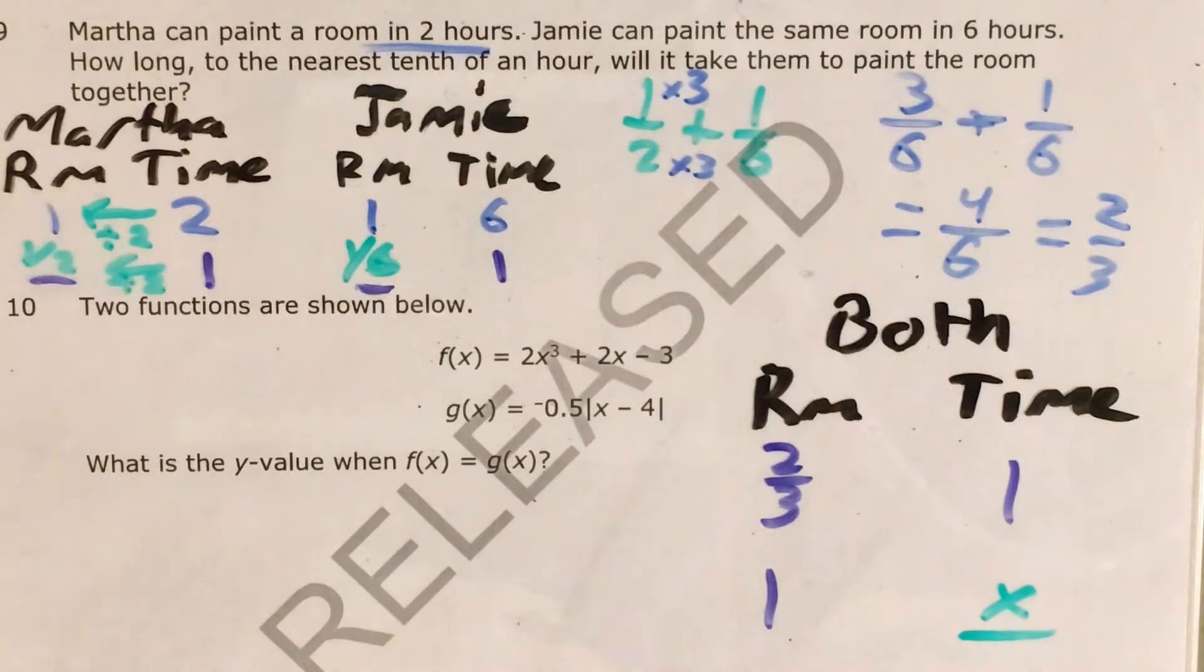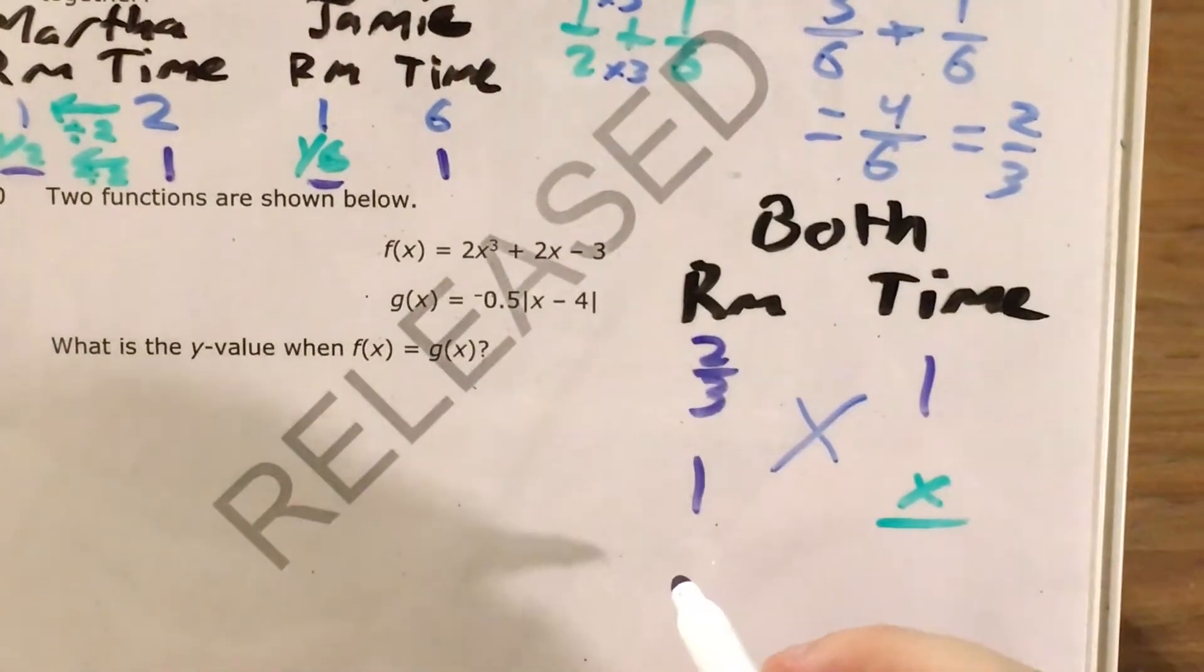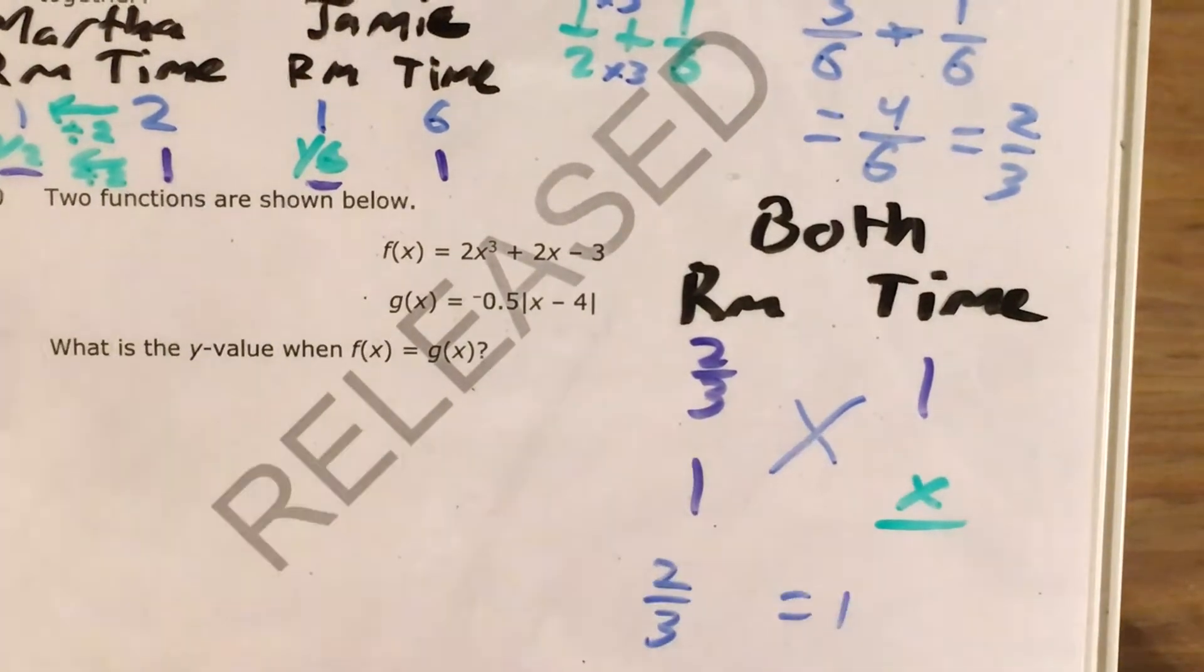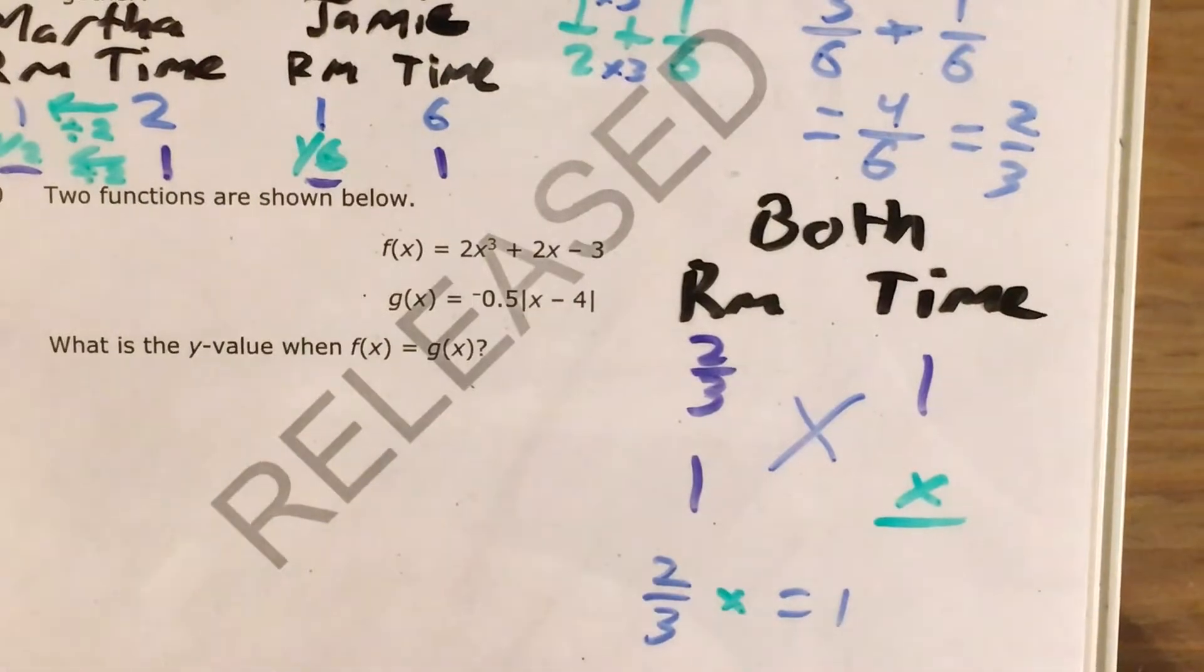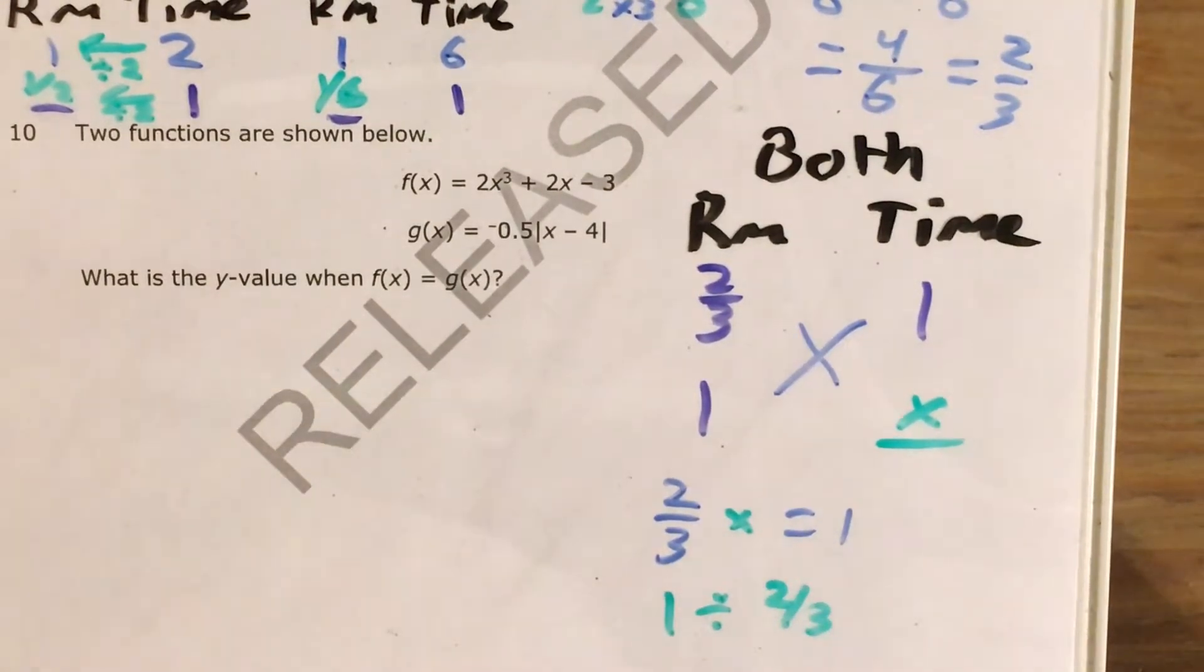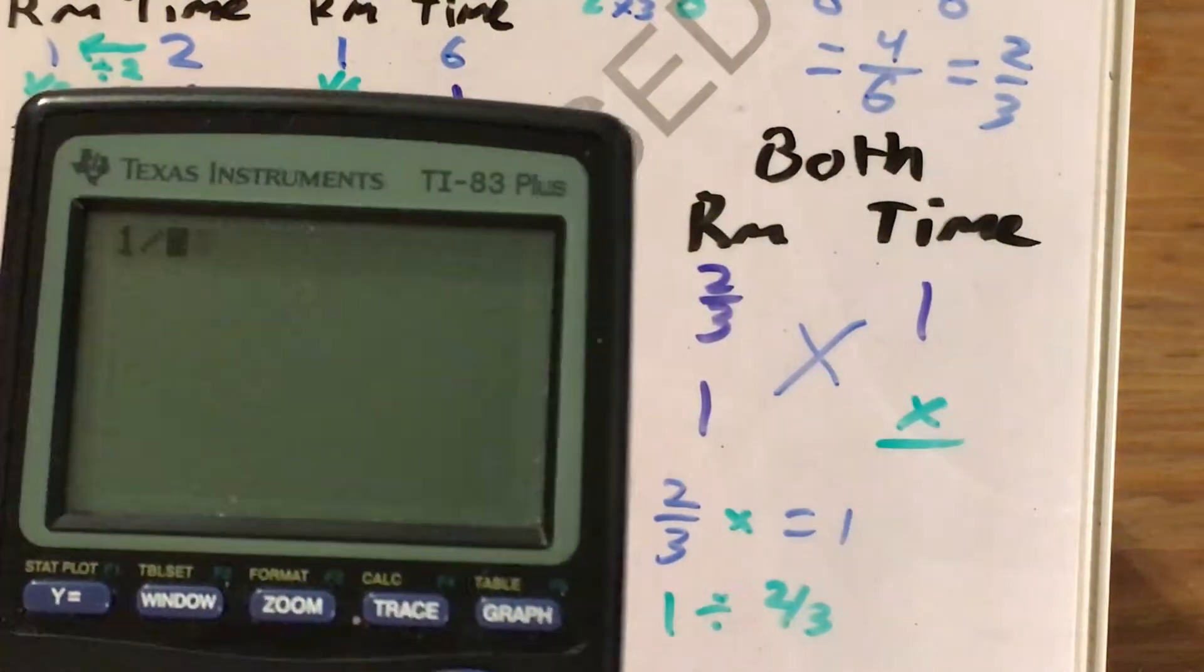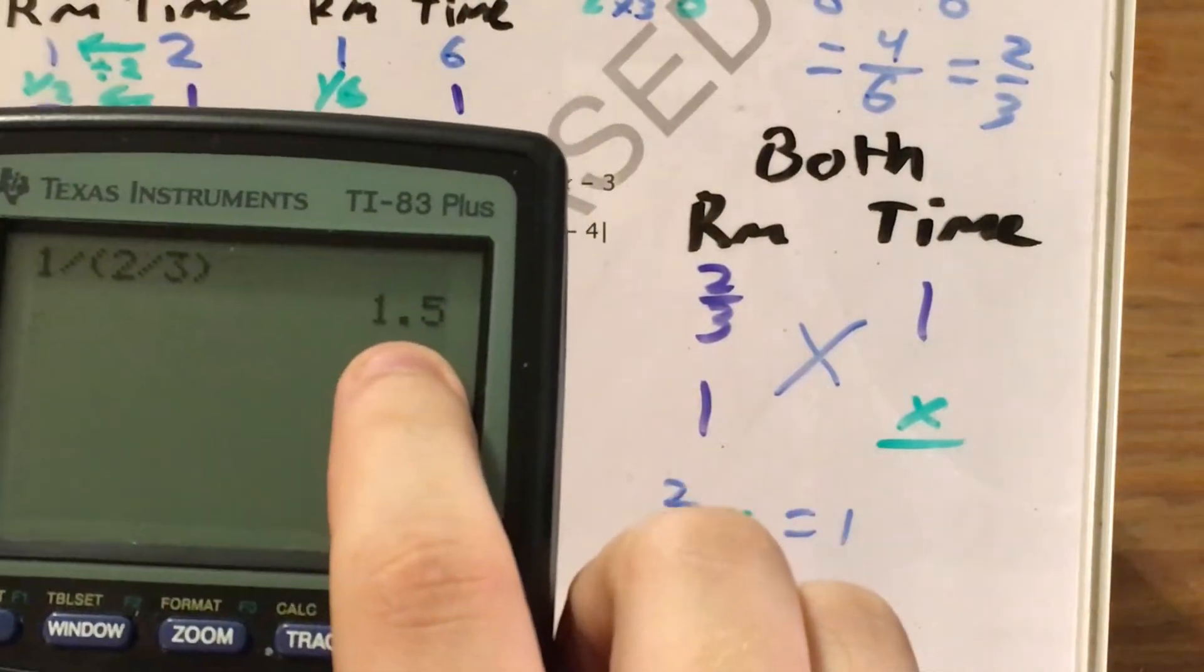And I will go ahead and cross multiply. One times one is just one. So two thirds x equals one. I can get x by finding one divided by two thirds. So if I do this in my calculator one divided by two thirds gets me one and a half.